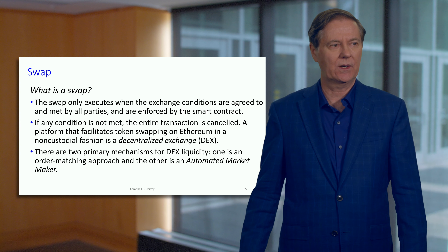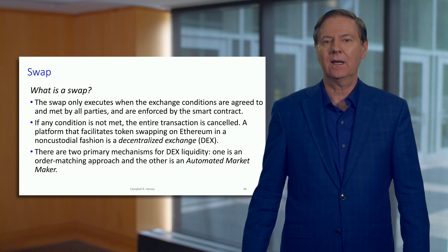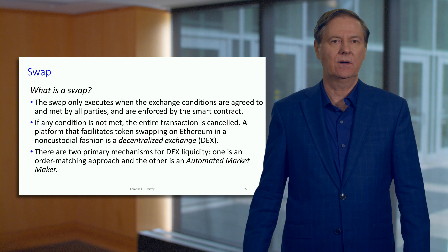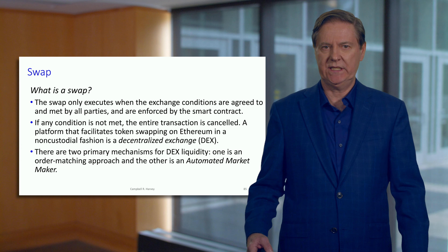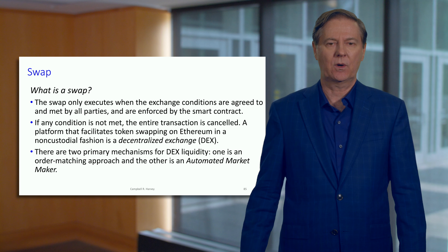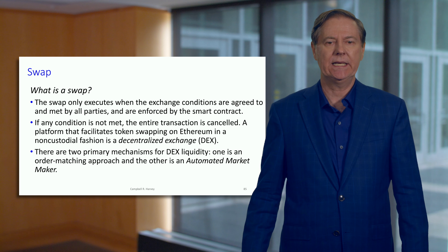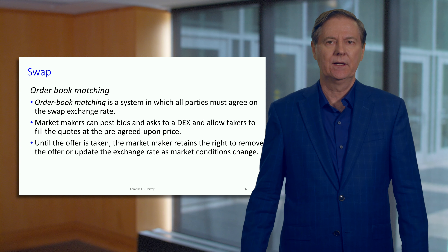When we talk about decentralized exchange, we use the word DEX — that's the lingo. A DEX means you're dealing with an algorithm, a smart contract; there is no other mechanism. There are two different categories of how this works: the first is order matching, and the second is an automated market maker. We'll spend more time on the automated market maker, as order matching is currently somewhat awkward to do.